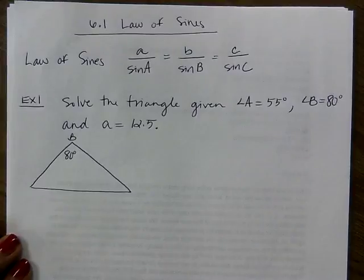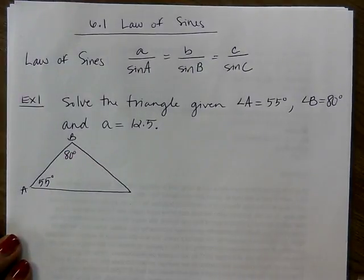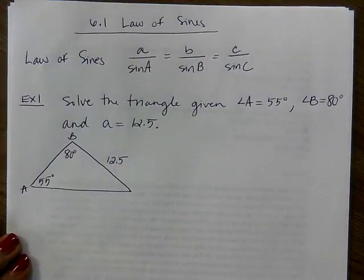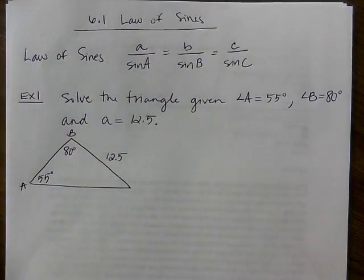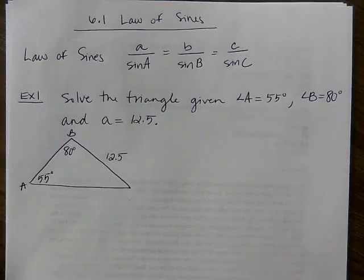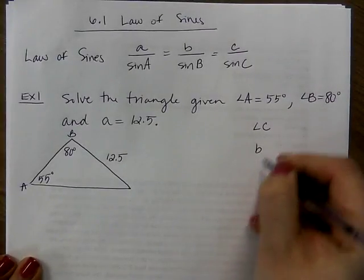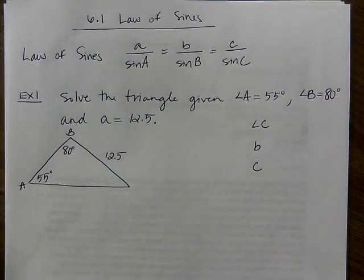I'll call this angle B because it looks most like 80 degrees. Then A at 55 degrees — side a is the side across from that angle, so this is 12.5. Remember, lowercase letters refer to sides and uppercase letters refer to angles. Also, the longest side is across from the largest angle, and the shortest side is across from the smallest angle. To solve the triangle means to find everything: angle C, side b, and side c.